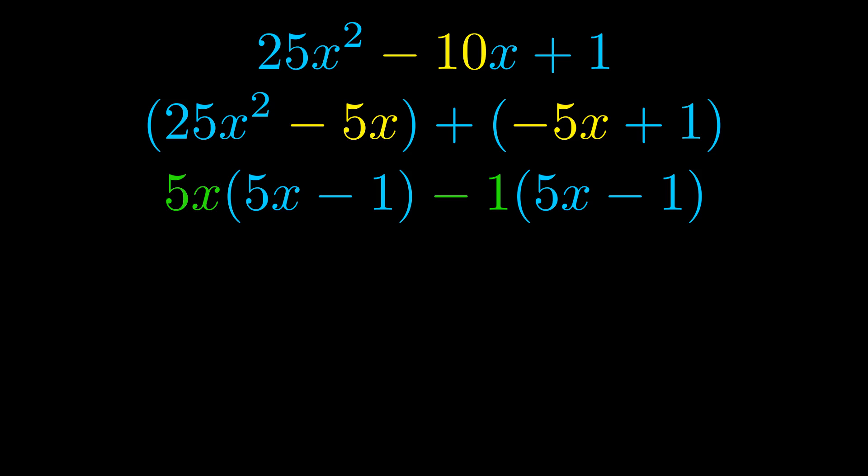Notice also how what remains inside of the parentheses is the same in both cases. The blue values are the same. Those blue values will become one of our factors and we will combine the two green values, the GCFs that we pulled out, to get the other one. And that is our fully factored equation.